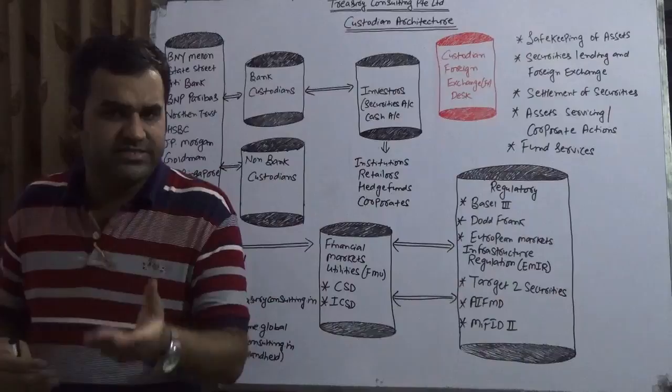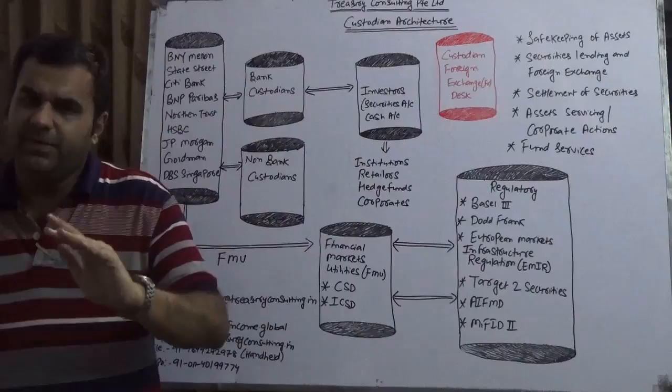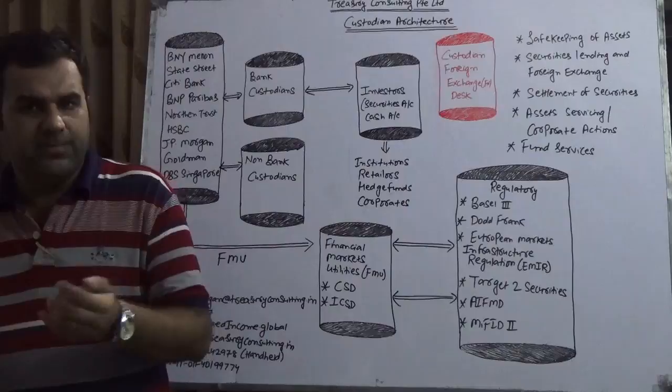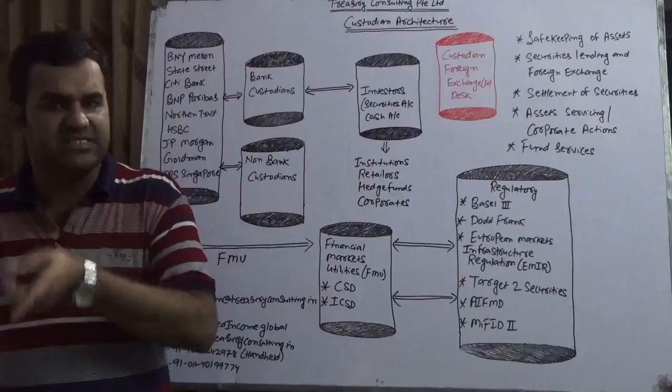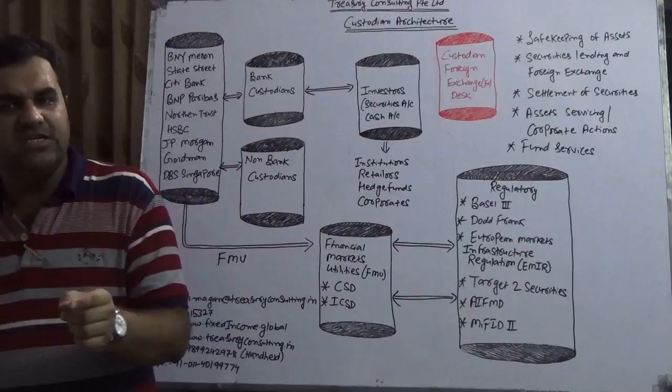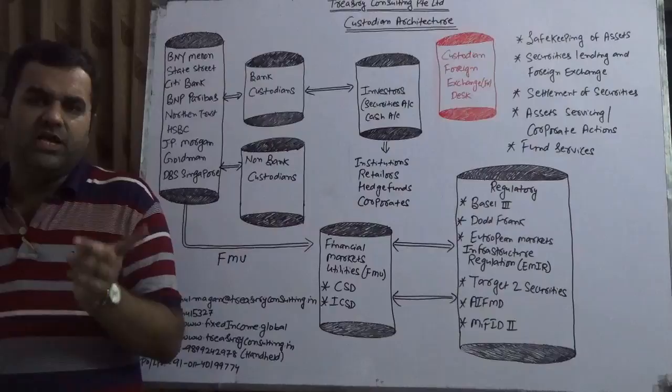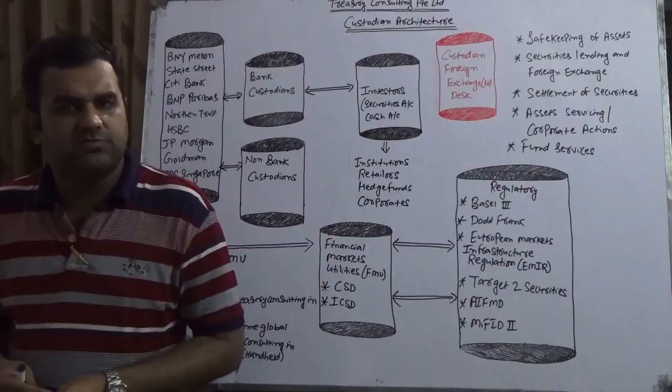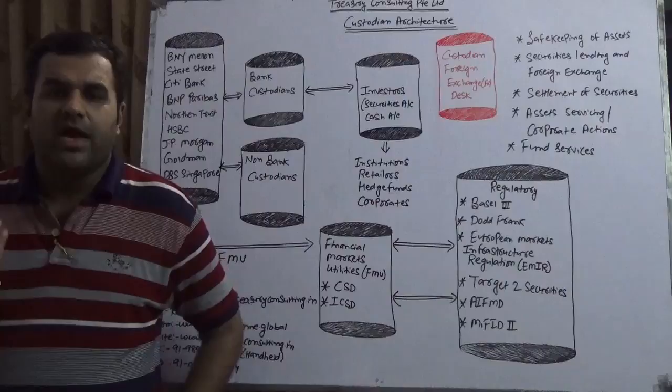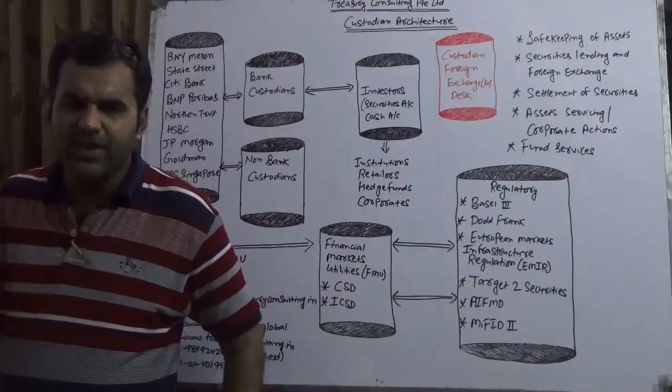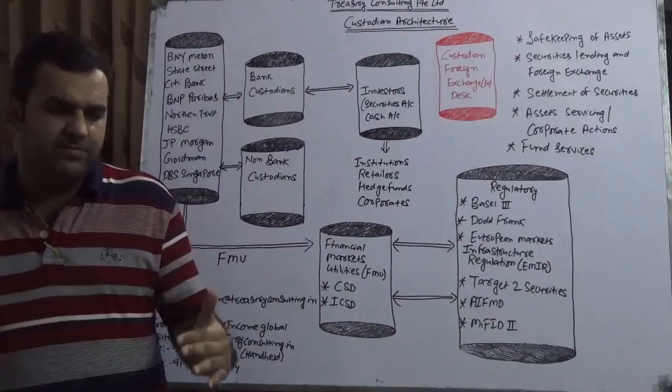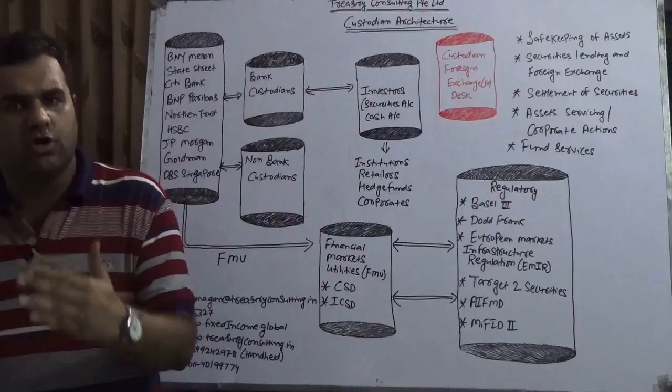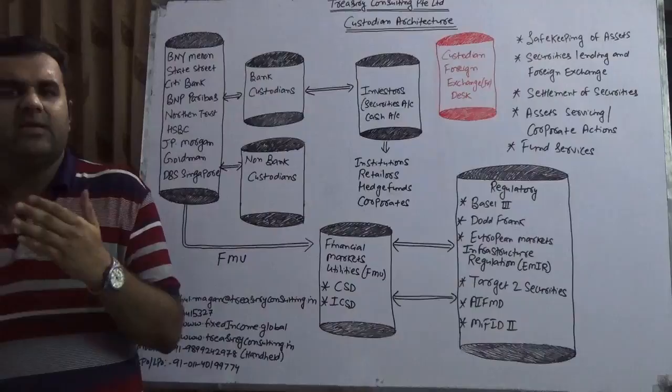Both cash and securities accounts are applicable to mutual funds. Let's take Vanguard as an example. Vanguard has 500 billion dollars of funds—AUM, assets under management. For custodian business, it's AUC, assets under custody. Vanguard has 500 billion dollars of securities and 500 billion dollars of cash that investors put in, managed by portfolio managers on behalf of Vanguard.